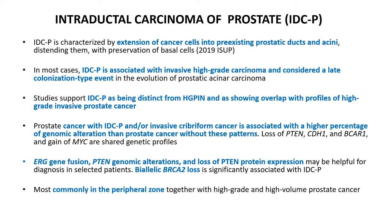If you do not have adenocarcinoma in the biopsy sample where you have diagnosed IDCP, it is a likely indication for asking for a re-biopsy, because the clinician might have missed the original cancer. Histologically it looks somewhat like HGPIN — high-grade prostatic intraepithelial neoplasia — although there are important differences. The molecular genetic profile is also slightly different: loss of PTEN, CDH1, ERG gene fusions, and loss of PTEN protein expression are common in IDCP, shared with acinar adenocarcinoma but not seen in HGPIN.